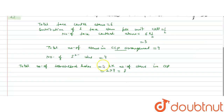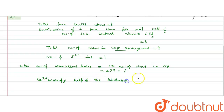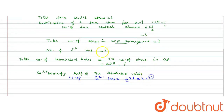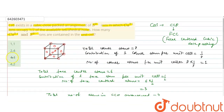Calcium ions occupy half of the tetrahedral voids. So number of Ca²⁺ ions = half of 8 = 4. Therefore, the total number of calcium two positive ions in a unit cell is 4, and the number of sulfide ions per unit cell is 4. The answer is four and four — the correct option is the third option. I hope you understood the solution. Thank you.